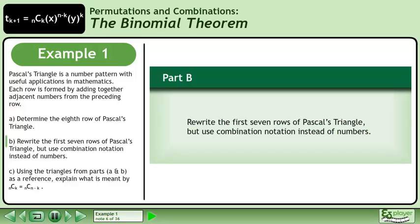In Part B, rewrite the first seven rows of Pascal's Triangle but use combination notation instead of numbers.